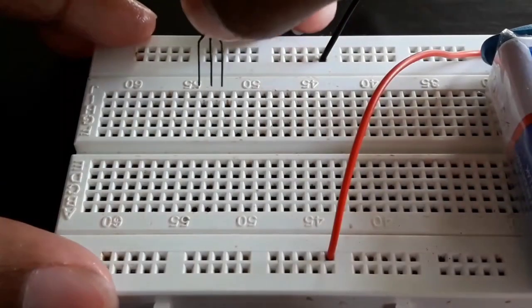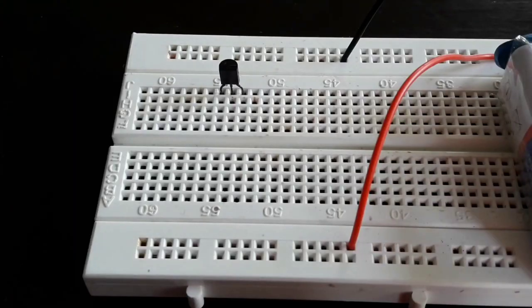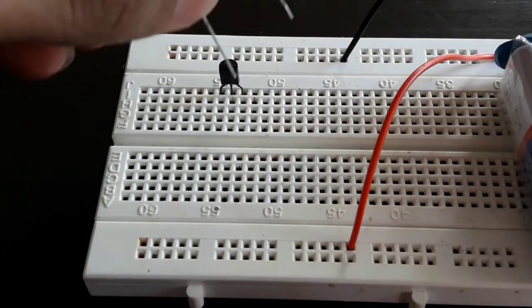Place the BC 507 transistor with the flat side facing you. Now connect the 330 ohm resistor to the base of the transistor to the negative side of the breadboard.